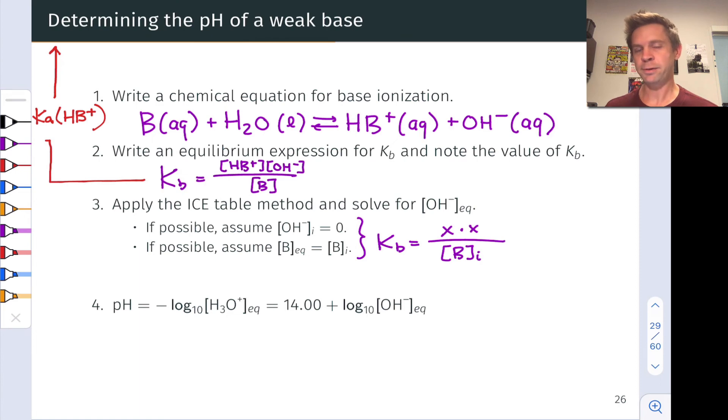This allows us to write a simplified equilibrium equation. Kb is equal to the molarity of hydroxide at equilibrium, let's call that X, times the molarity of HB⁺ at equilibrium, that's also equal to X. Notice no plus 10⁻⁷ there, because we assumed zero initial hydroxide.